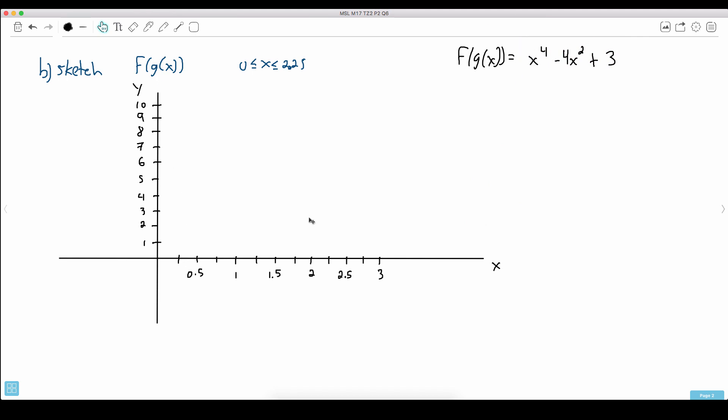So this is the function I want to graph and they want us to sketch this. I want to point out something very important that a lot of people forget. Look carefully at this domain. Remember domain means the range of x values. They only want it from 0 to 2.25. That means you are not allowed to give any values past that. If you do that you will not get full marks.